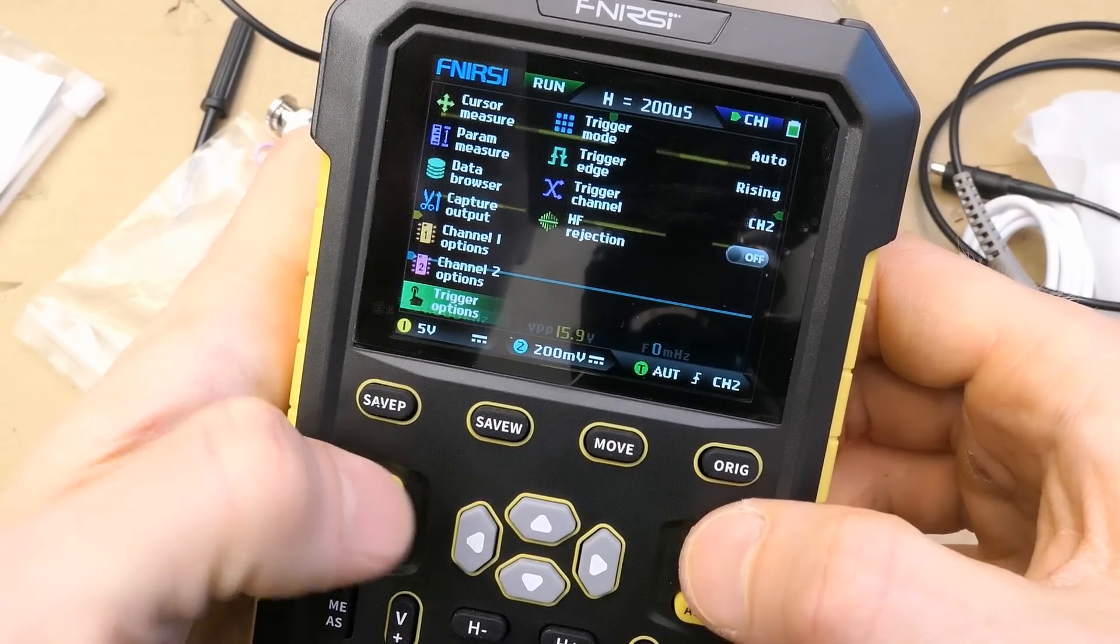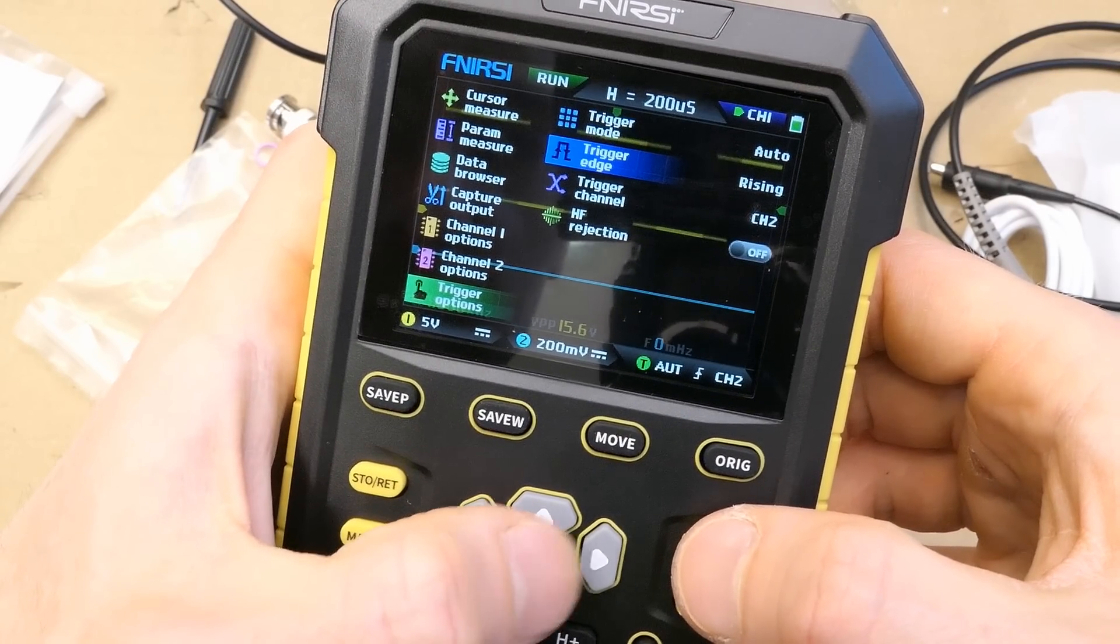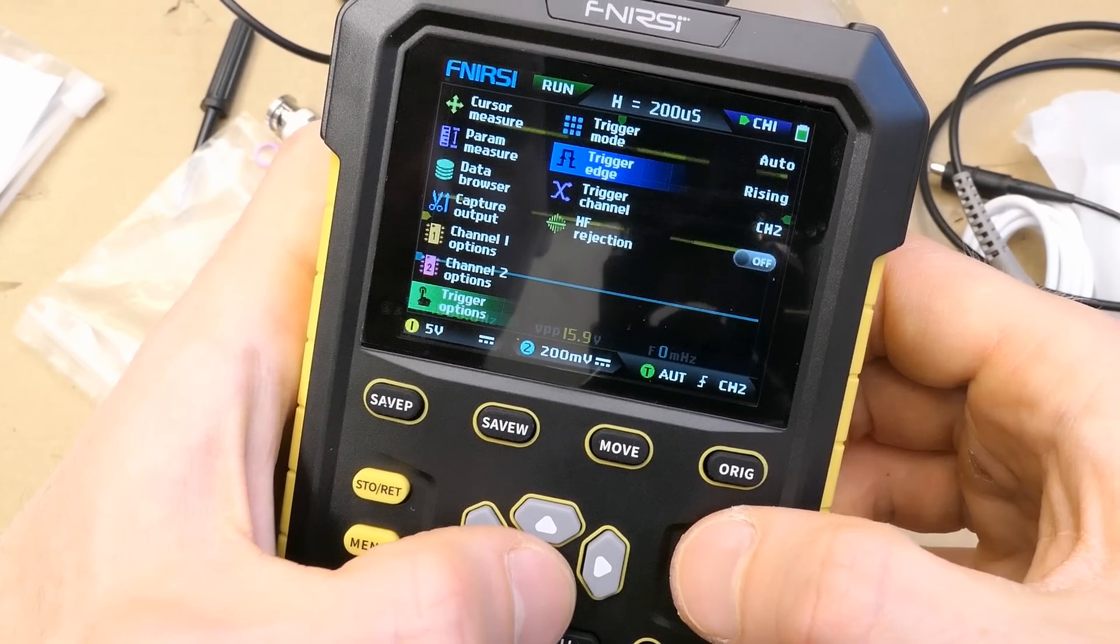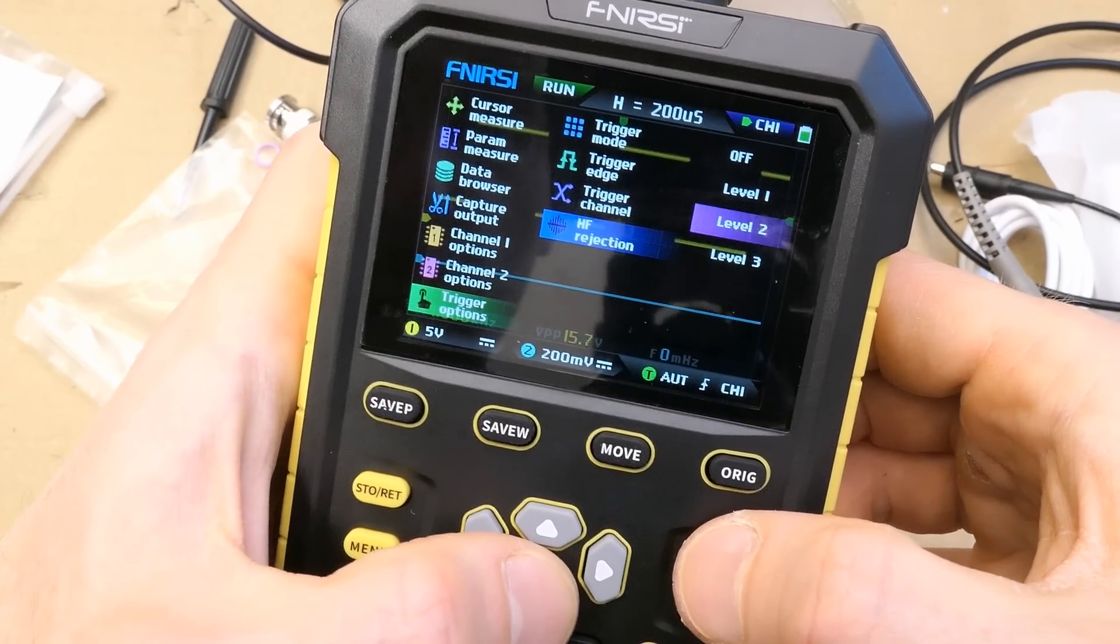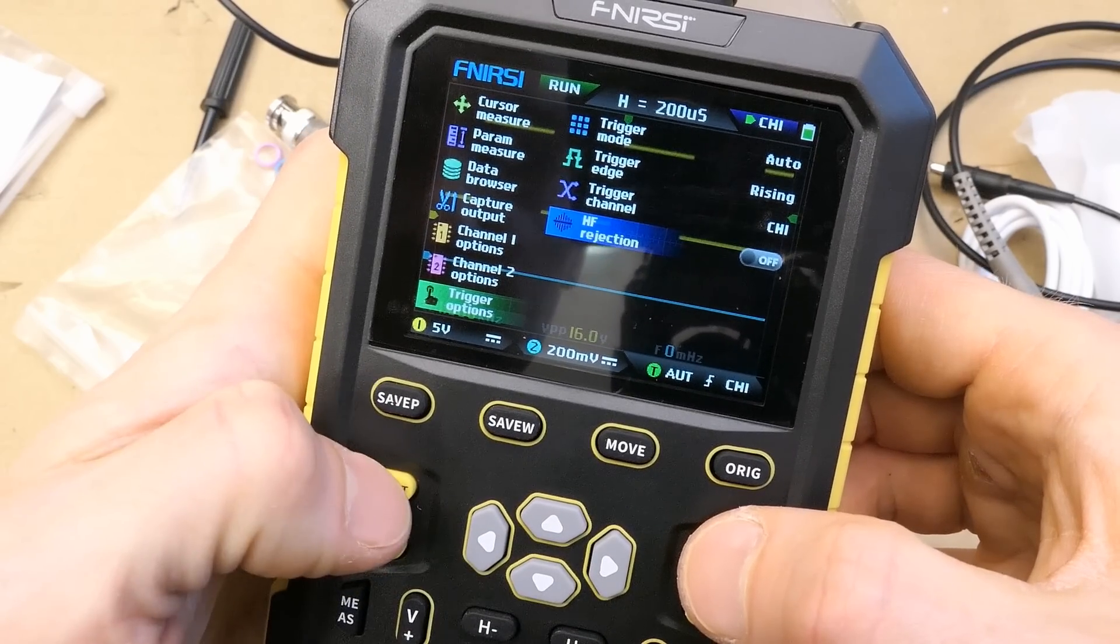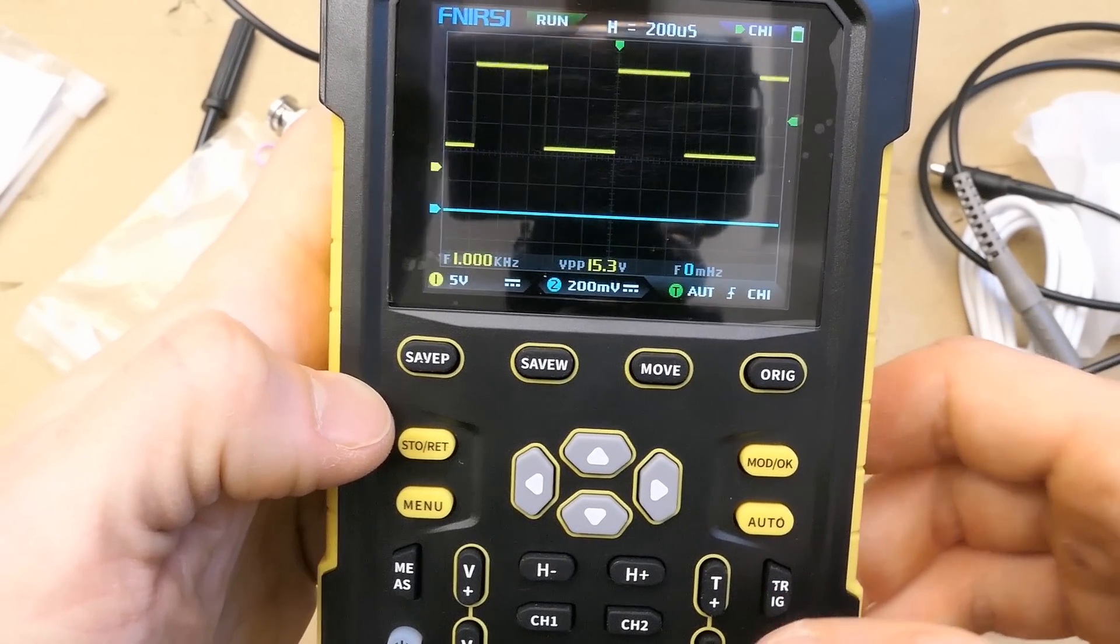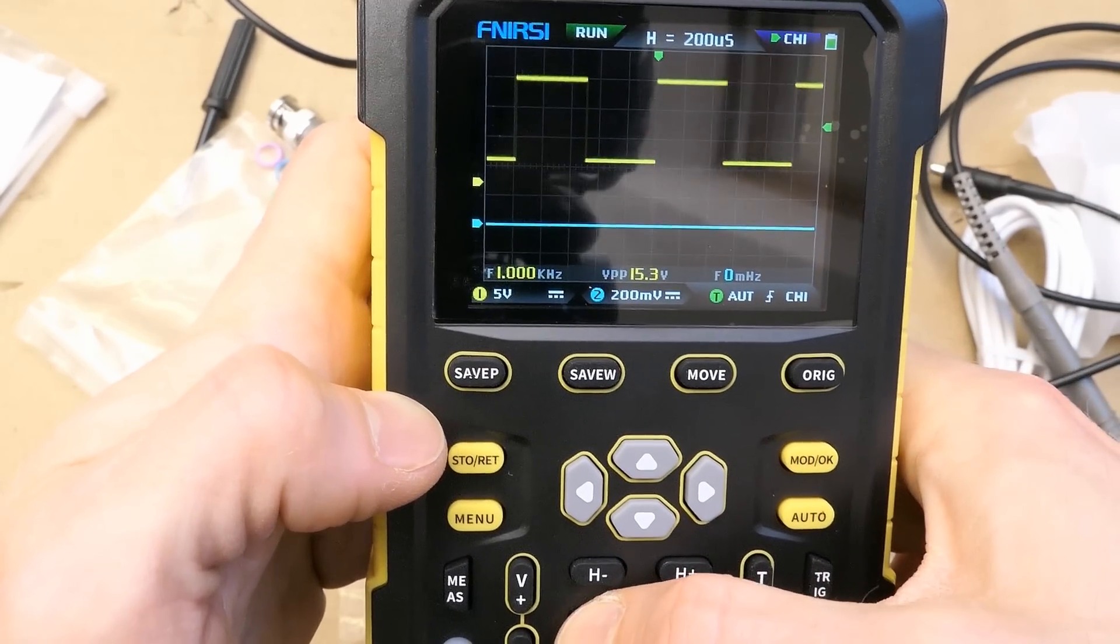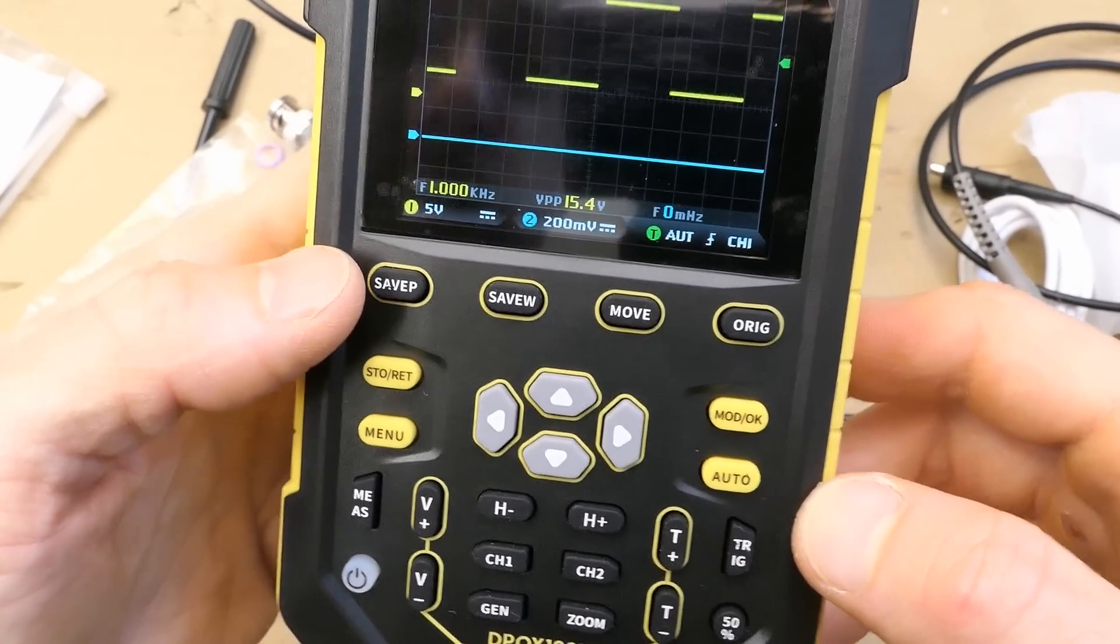Trigger options, automatic, single normal, trigger edge rising or falling, trigger channel one or two, high frequency rejection, three levels, nice, but of course you can access some settings, directly using buttons for the trigger settings, channel two settings, channel one setting, measurement settings, you don't have to go through the entire menu.